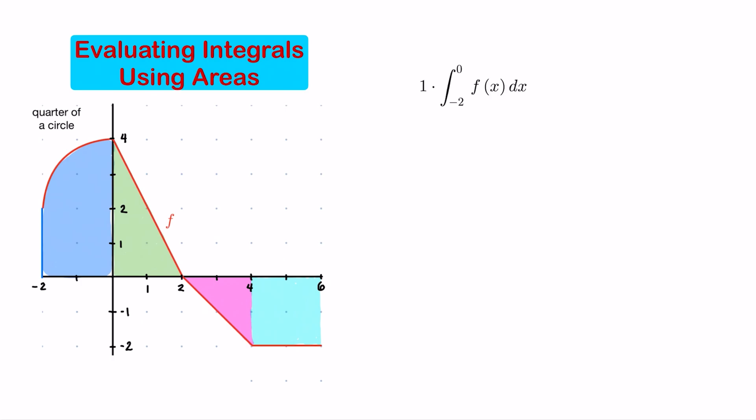To evaluate the integral from negative 2 to 0 of f dx, if we look at this closed interval from negative 2 to 0, it seems that we only have a region that is above the x-axis. Therefore the value of that integral is just equal to the area of this blue region.